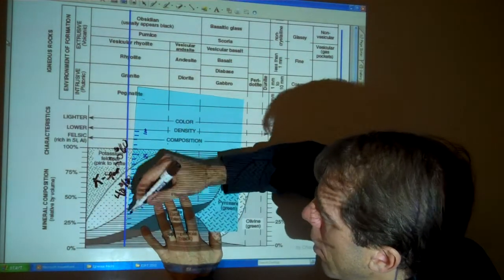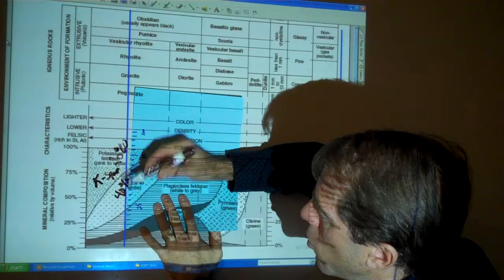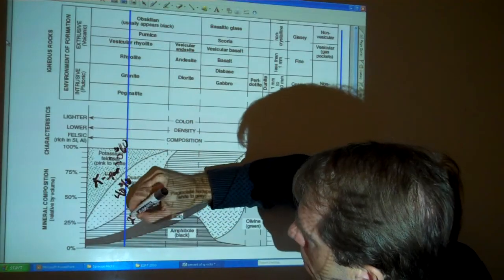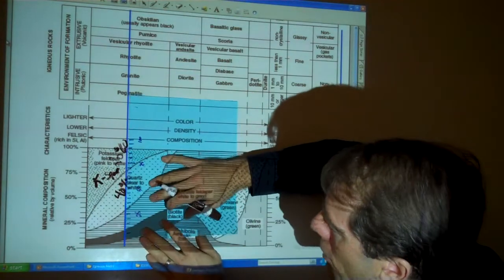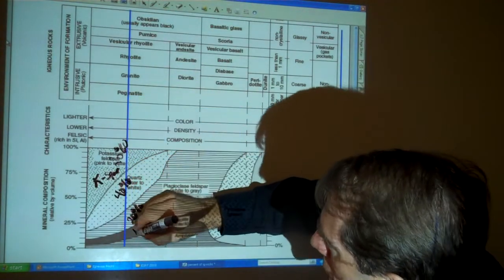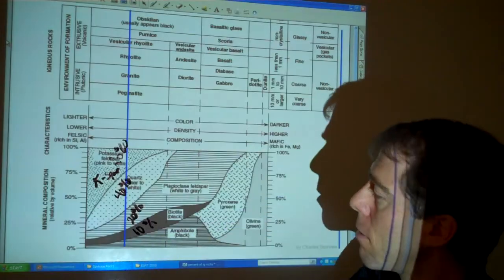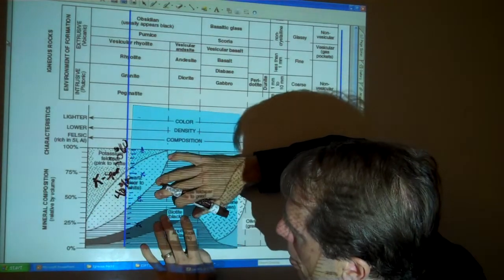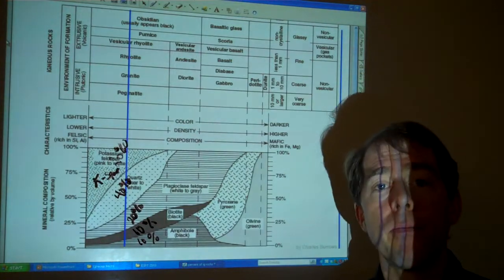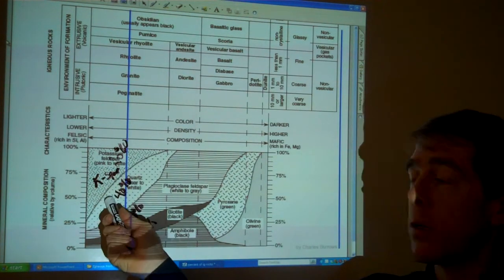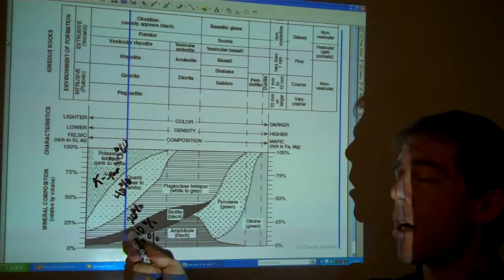If we look here, 10, 20%, about 20% plagioclase feldspar. If I go here, it's about 10% biotite. And if I go here, 10% amphibole. So if you look, 20, 40, 60, 80, 90, 100. 100%.